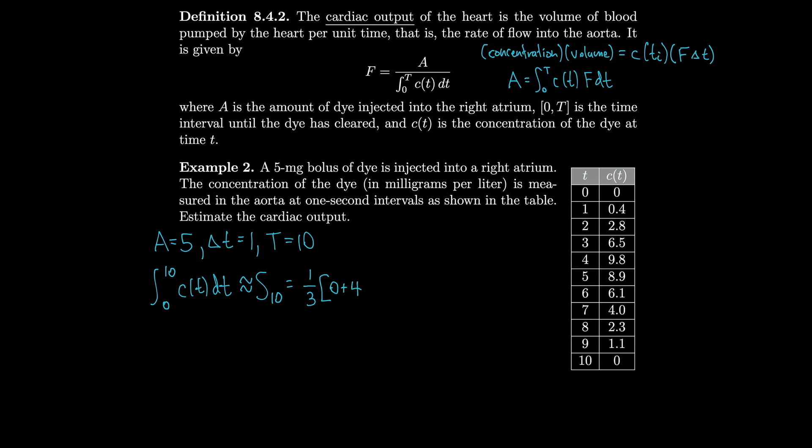Remember Simpson's rule goes in the form of four, two, four, two, four, two for the coefficients for each of the y values. So this will be four times our next y value of 0.4, plus two times our next value of 2.8, plus four times 6.5, plus two times 9.8, plus four times 8.9, plus two times 6.1, plus four times 4.0, plus two times 2.3, and plus four times 1.1, plus zero.